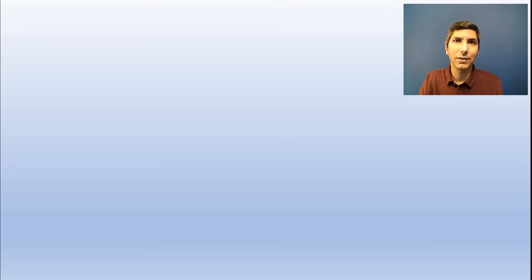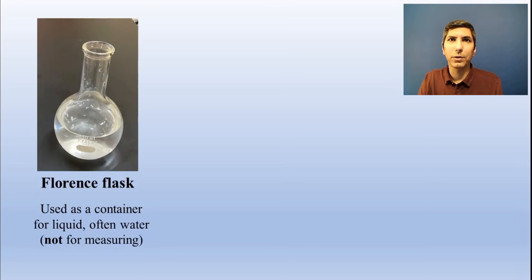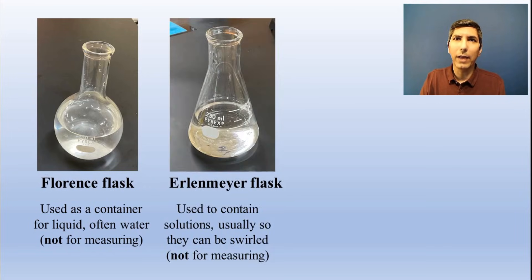You need to know the different types of flasks in the laboratory. A Florence flask is basically just a storage container for a solution or commonly for distilled water. It's normally round and doesn't have any measuring marks on it, so it's strictly for containing a liquid. An Erlenmeyer flask, on the other hand, has this narrow neck on it. We use Erlenmeyer flasks so we can swirl the solution around inside and shake it up a little without the content splashing out.